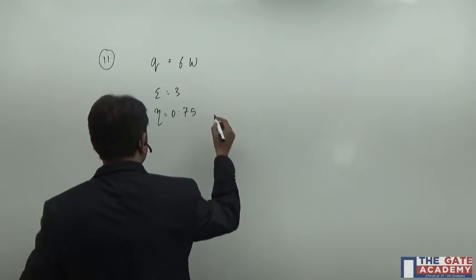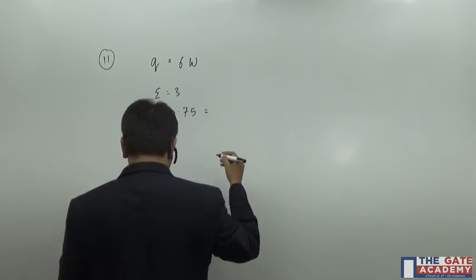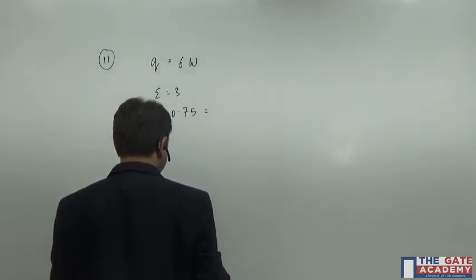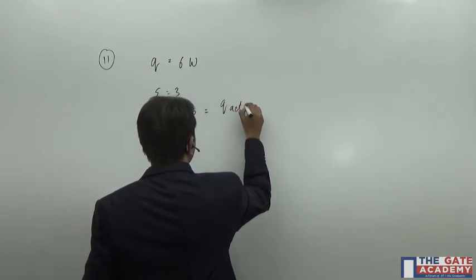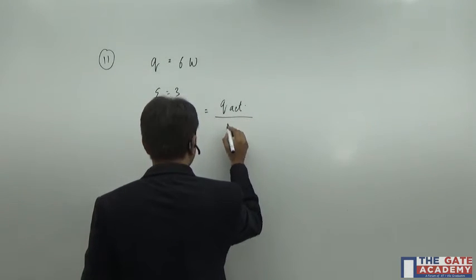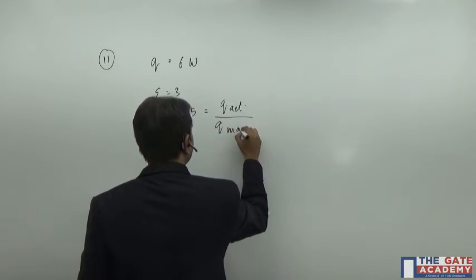So what is this actually? See, efficiency is given by, how it is calculated? It is given by Q actual divided by Q maximum.